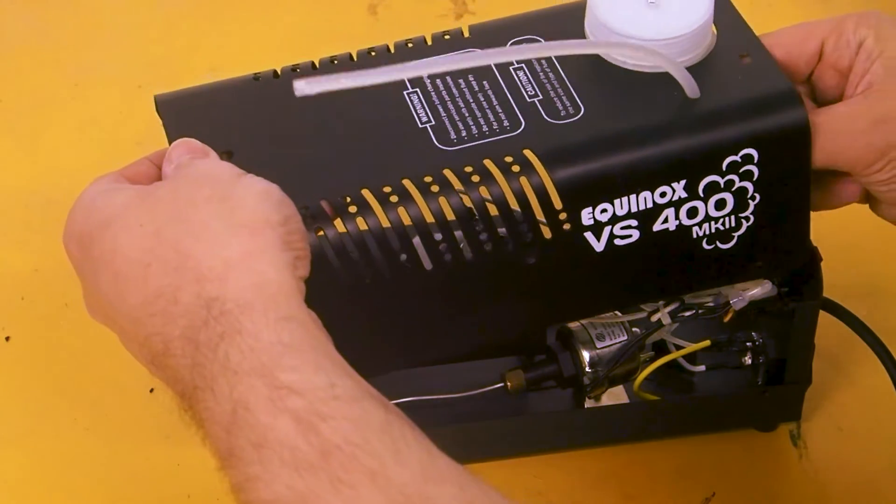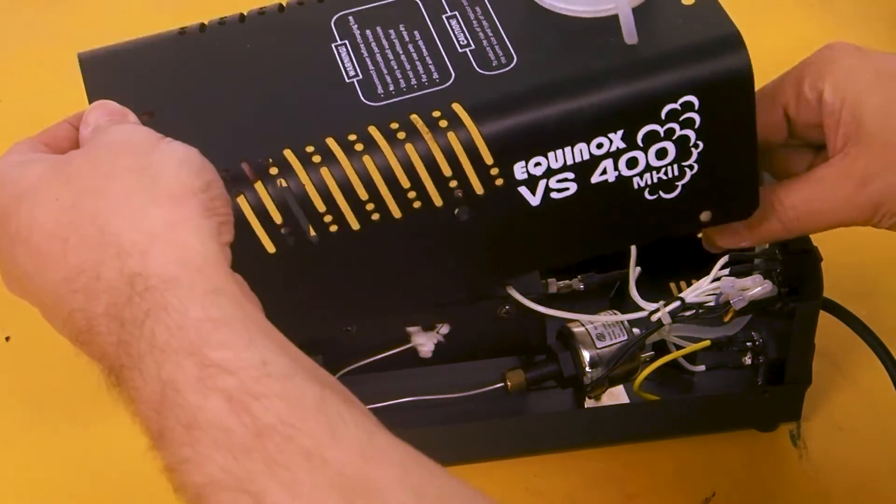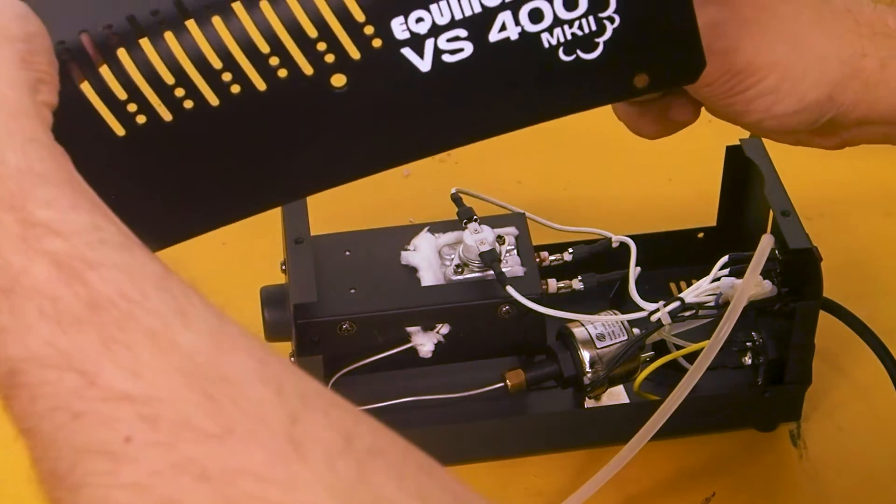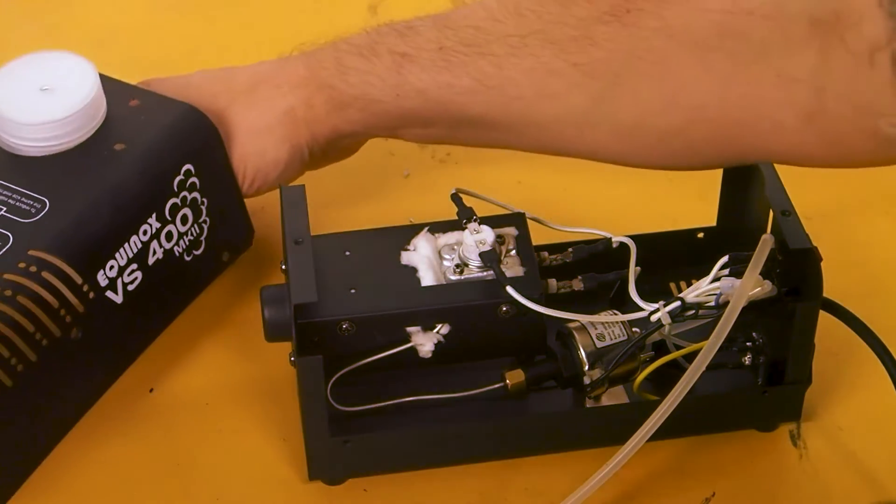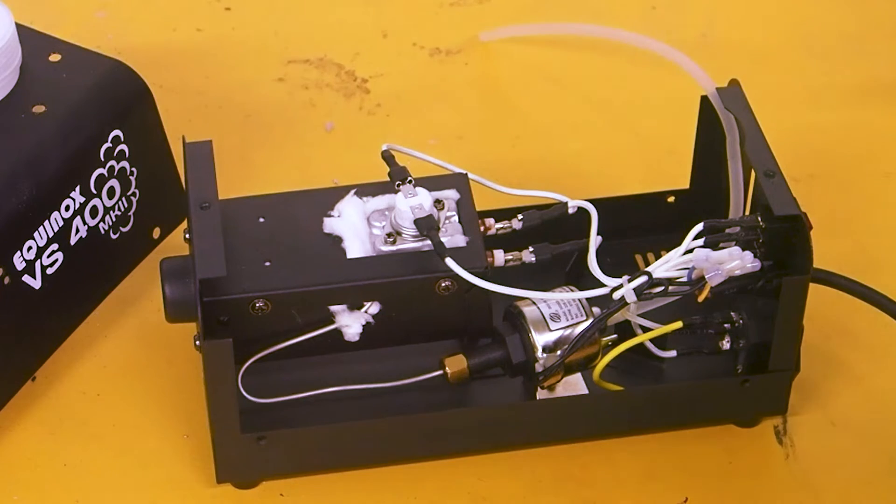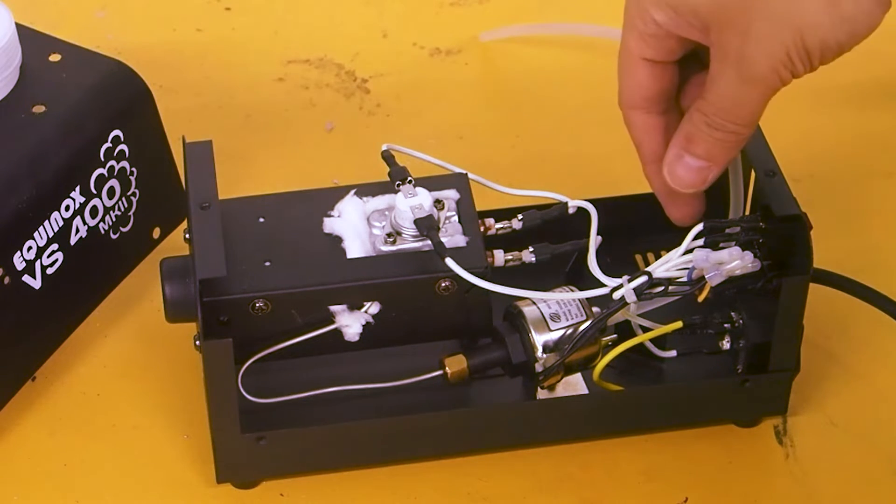Once we've taken all the screws out, we can take the lid off carefully, need to ease the tube through. It appears to be taking the smoke canister with it, so we'll just let that sit to one side. Now we've got the lid off, we can take a look at the components.